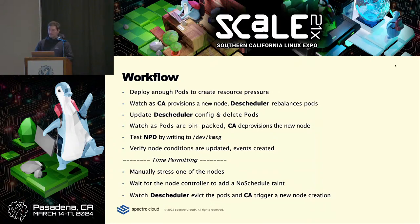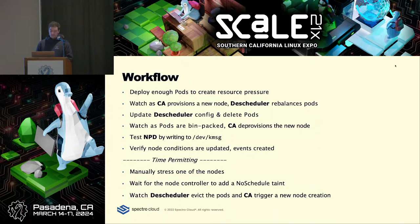For the demo, I have an environment in Google Kubernetes Engine. I have a single node running in it, and I'm going to deploy enough pods to create resource pressure. Then we'll watch as Cluster Autoscaler provisions a new node. Subsequently, Descheduler will rebalance pods to have an even spread between the two nodes, which wouldn't happen by default.